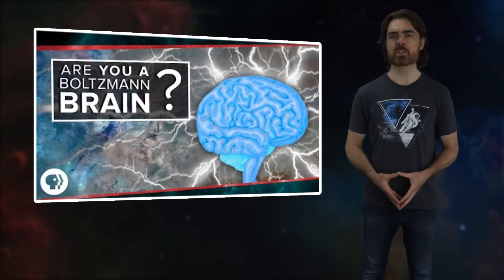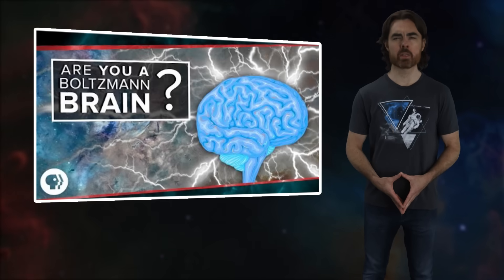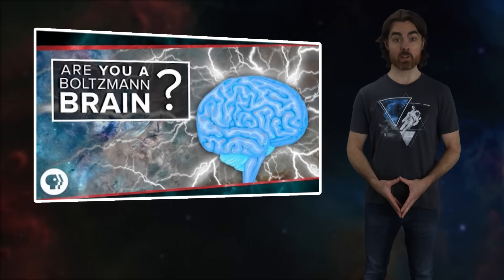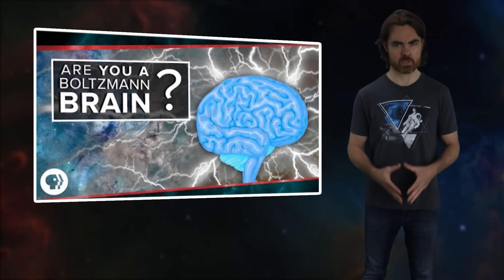We actually did talk about a case where a random drop in entropy led to something very much like a white hole in this episode. It's been speculated that the Big Bang itself came from such a profoundly improbable entropy dip. And as it happens, the Big Bang looks, mathematically at least, much like a white hole.